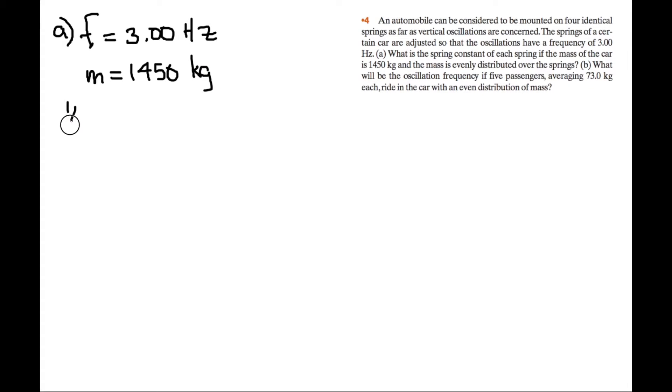So one quarter of the mass, which is because there's four springs, so we're going to take a quarter of the mass, one for each, like the mass that's on each spring because it's evenly distributed, is equal to 362.5 kg.